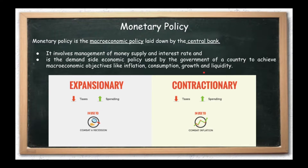To reduce the money supply, we use the contractionary policy — this will combat inflation. So when RBI decides money supply should increase, it reduces interest rates or taxes — we call that an expansionary policy. And if it is reversed, where interest rates increase, that will be our contractionary monetary policy.